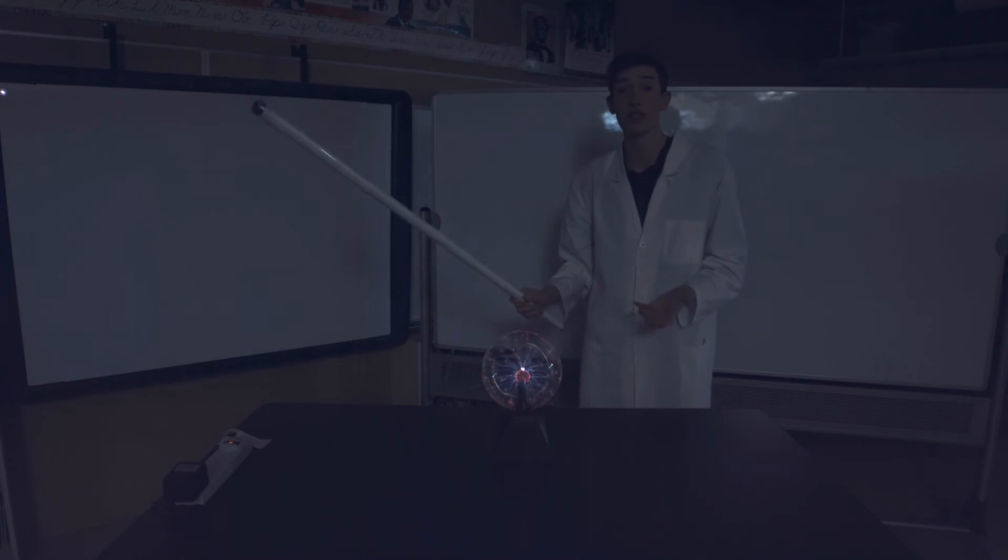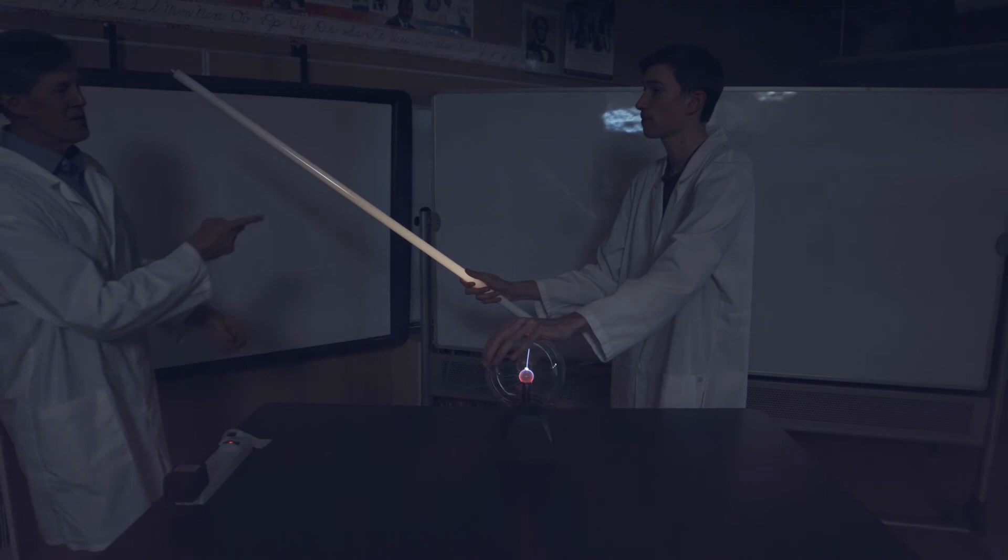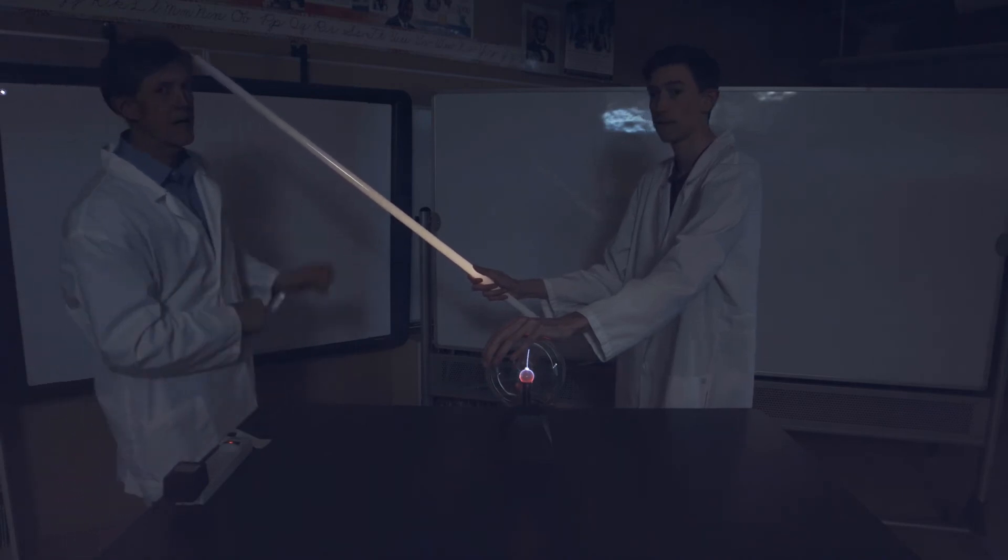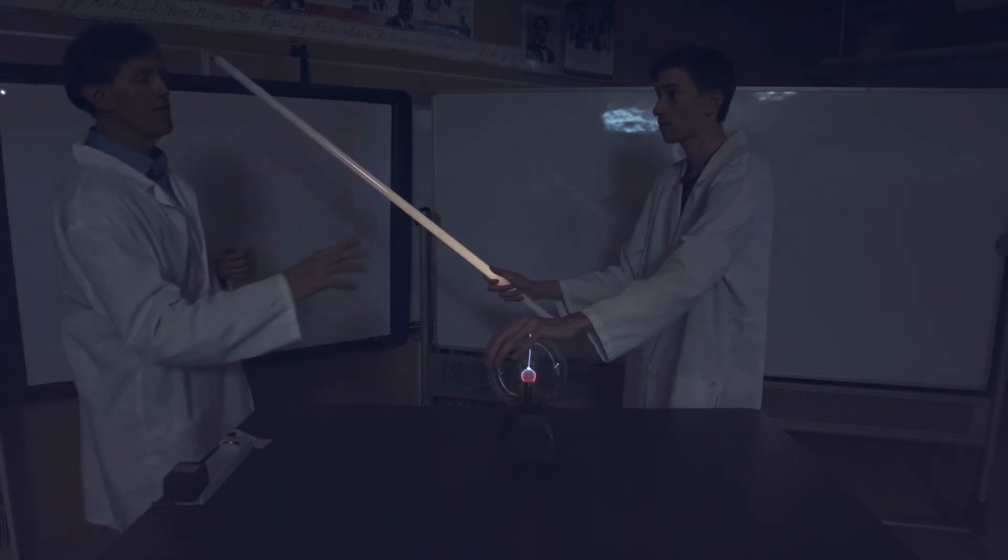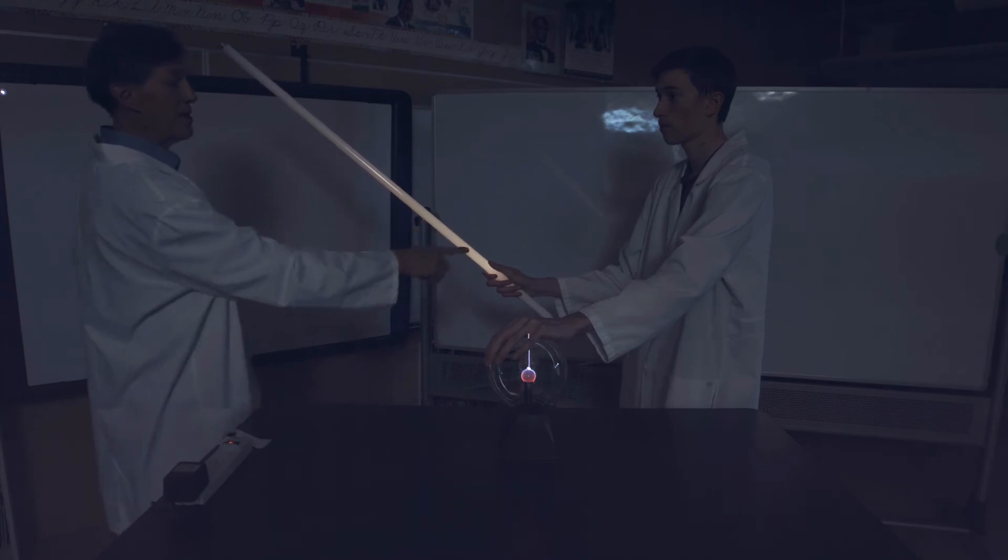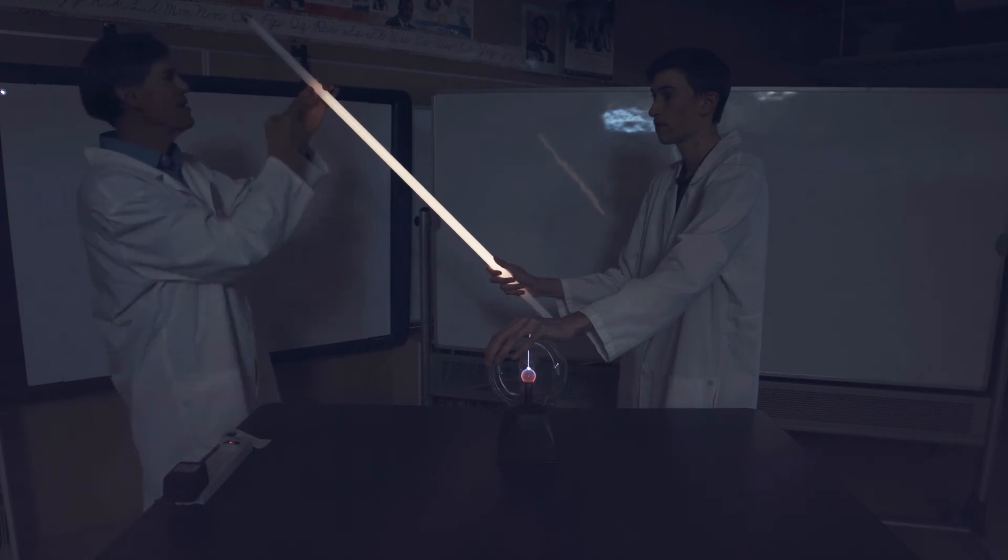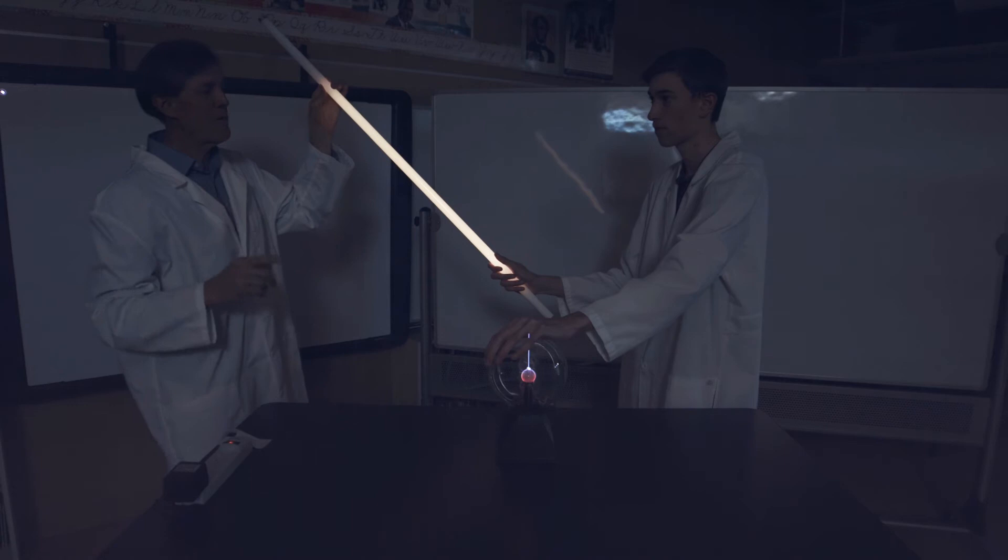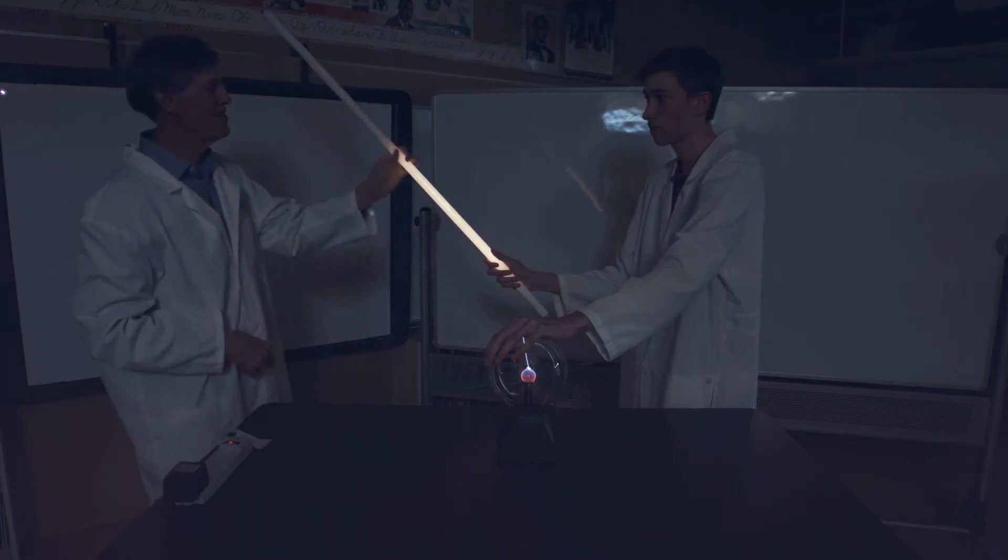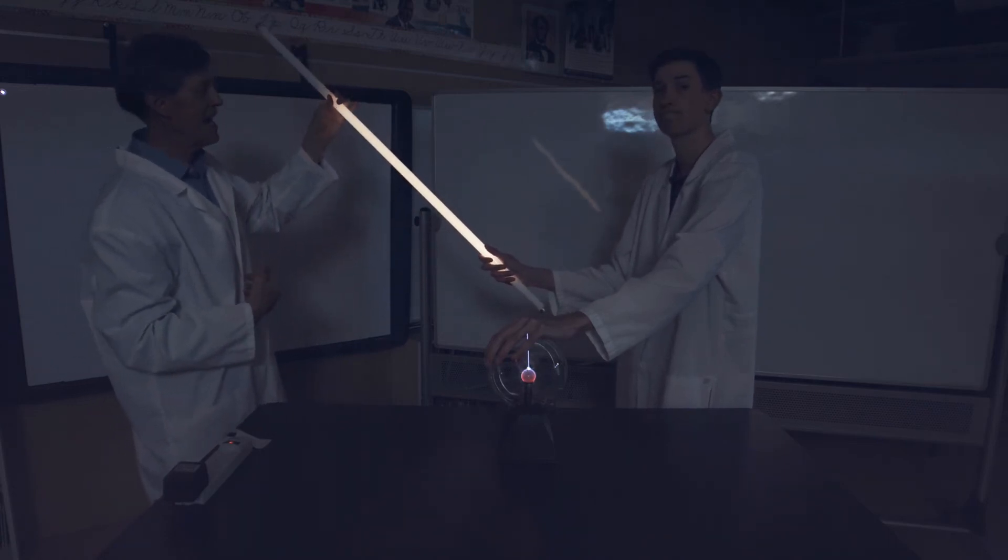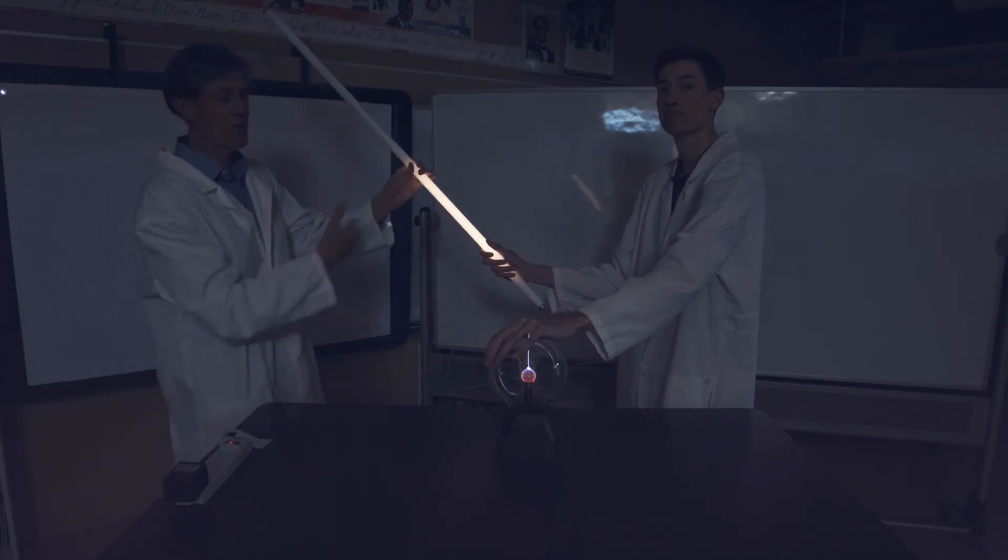Let's do one more demonstration with my dad. So now watch what happens when I touch the end right here. Electrons are going to travel from the globe through David to David's hand through the tube. And they're going to stop right here. Why is this part not lit? It's because the electrons now are going to leave through my hand and go to the ground. Now watch what happens when I slide my hand back and forth.